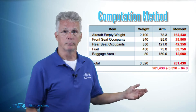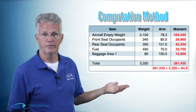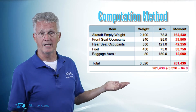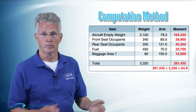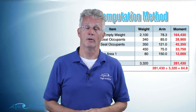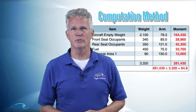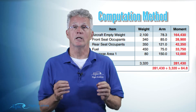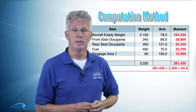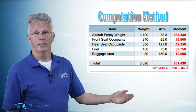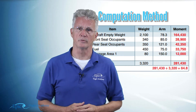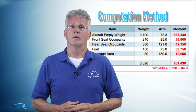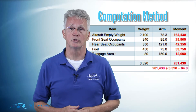Remember our basic formula: weight times arm equals moment. On our computation table, if the weight of the baggage in area 1 was 80 pounds and I multiply that times the 150-inch arm, what do I get? 12,000 pound-inches — that's the moment. We express moment in inch-pounds because the arm is in inches and the weight is in pounds. So in this example, the baggage had a moment of 12,000 inch-pounds.